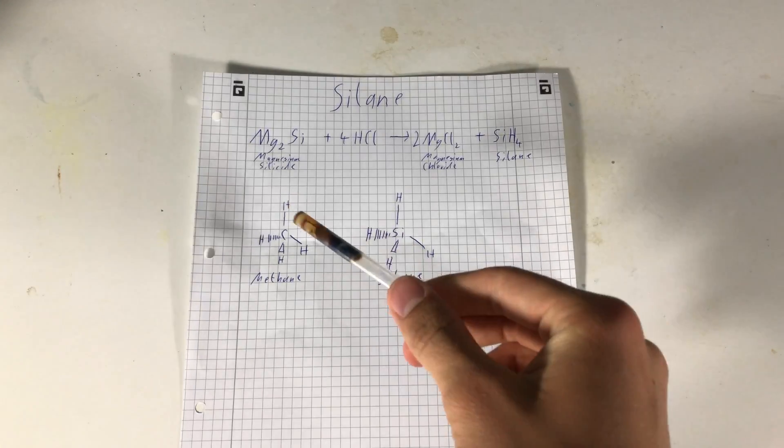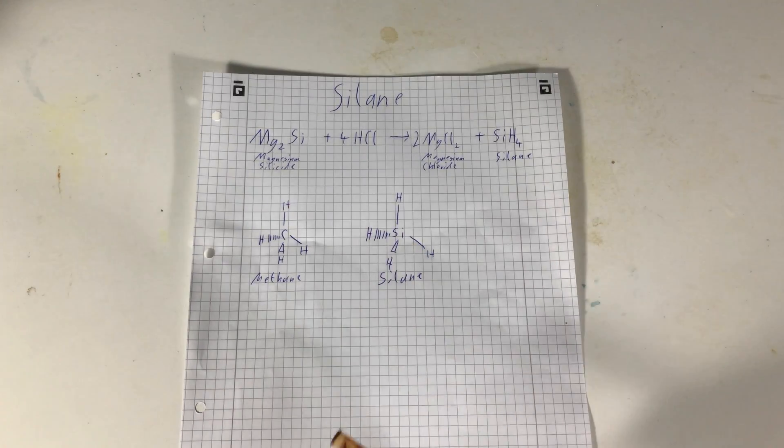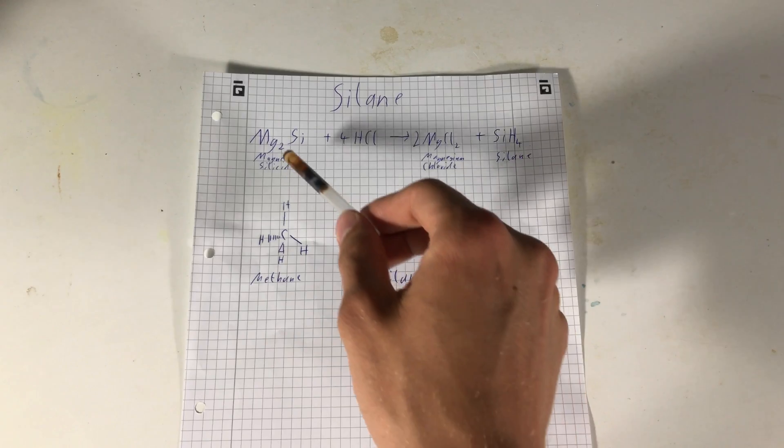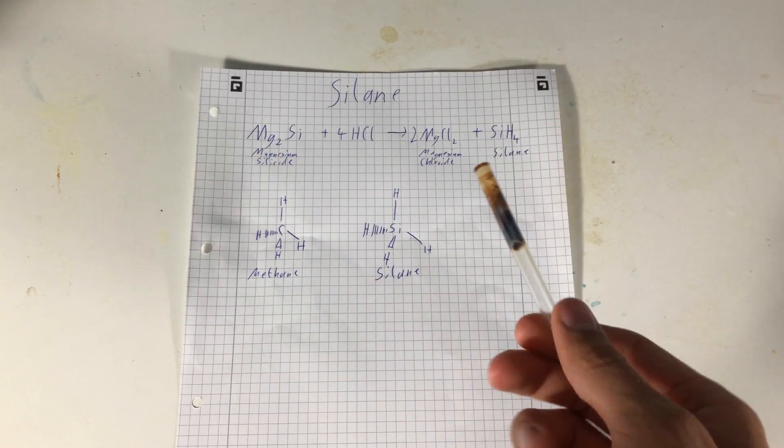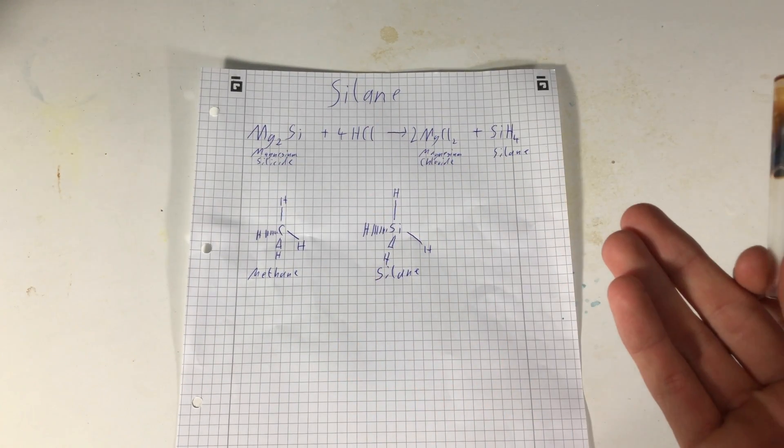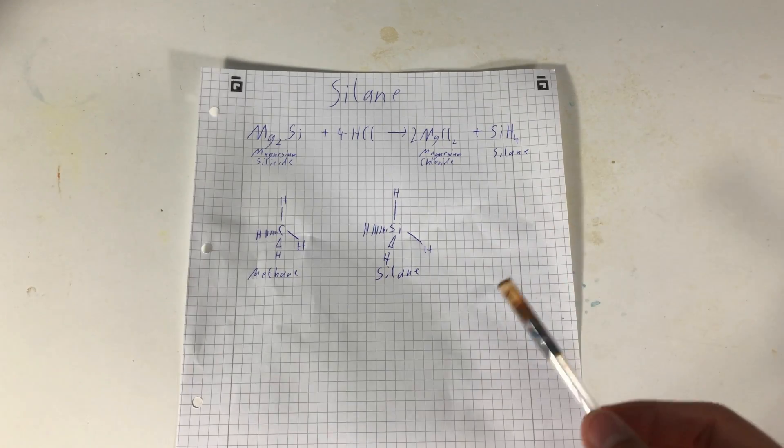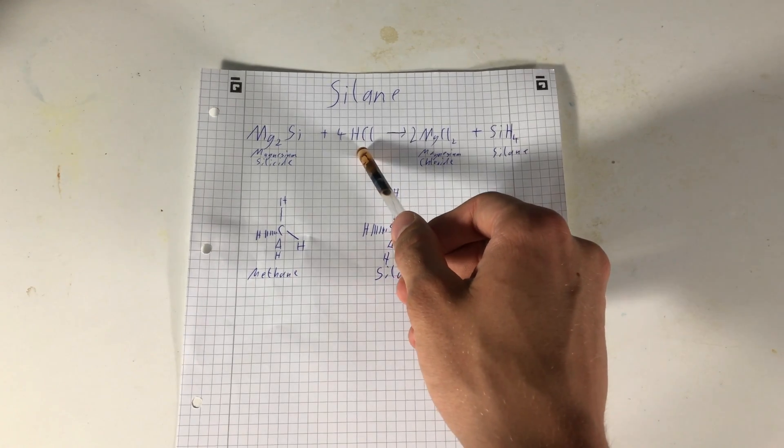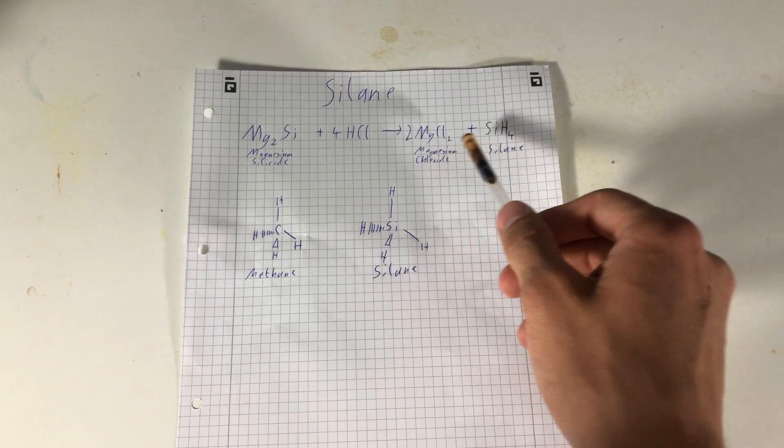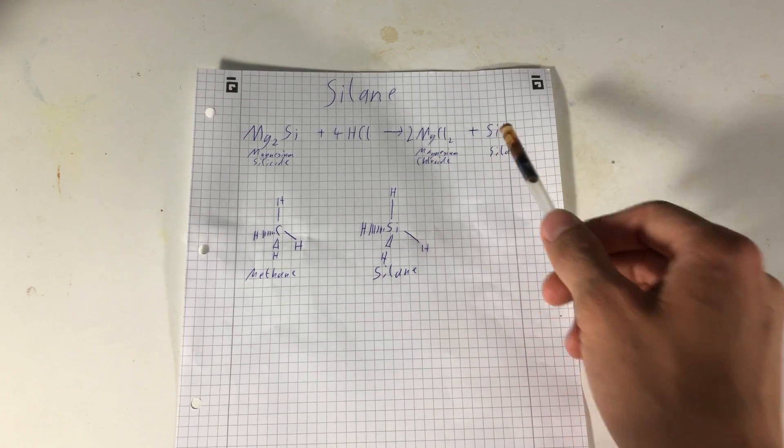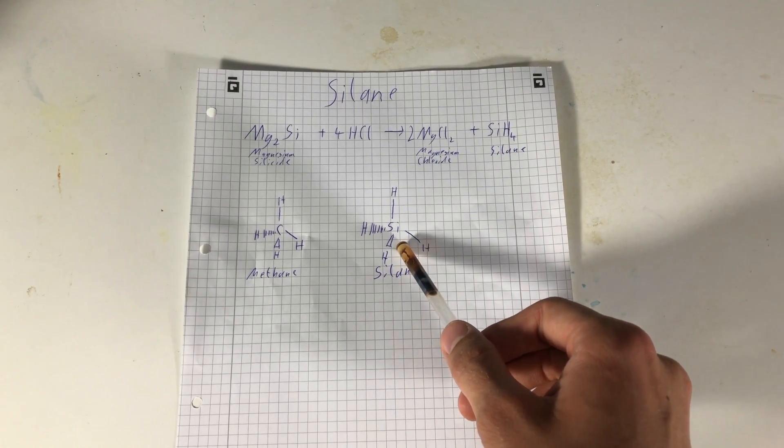Now, let's get to the reaction. What actually happened here, was that magnesium silicide, or the greyish powder in the bottom round bottom flask, reacted with hydrochloric acid to form magnesium chloride and silane gas. This here is silane.